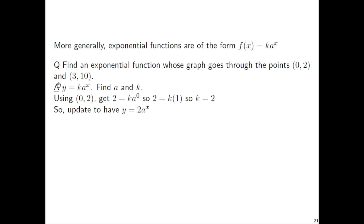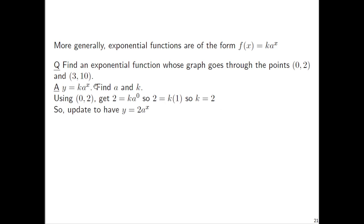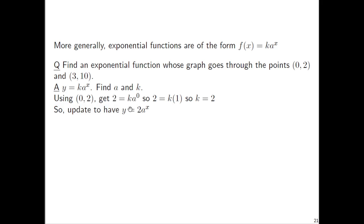Now updating, now that we know that k equals 2 we have y equals 2 times a to the x and we can now use the information from the other point. Use the information from the point 3, 10 and now let's solve for a. Take 10 equals 2 times a to the 3rd and divide both sides by 2 so you have 5 equals a to the 3rd. Now cube root both sides so a equals the cube root of 5. You can also write that as 5 to the 1/3 power.